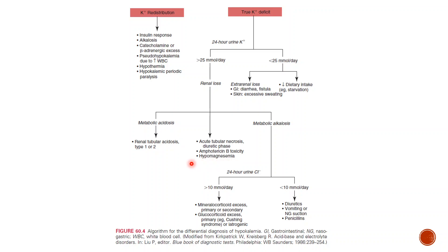If the acid-base status is variable, the most likely causes are acute tubular necrosis or hypomagnesemia. Hypomagnesemia causes hypokalemia because magnesium deficiency leads to loss of potassium from renal outer medullary potassium channels. It also inhibits sodium-potassium ATPase, resulting in more extracellular potassium being delivered to the kidneys and lost through urine.